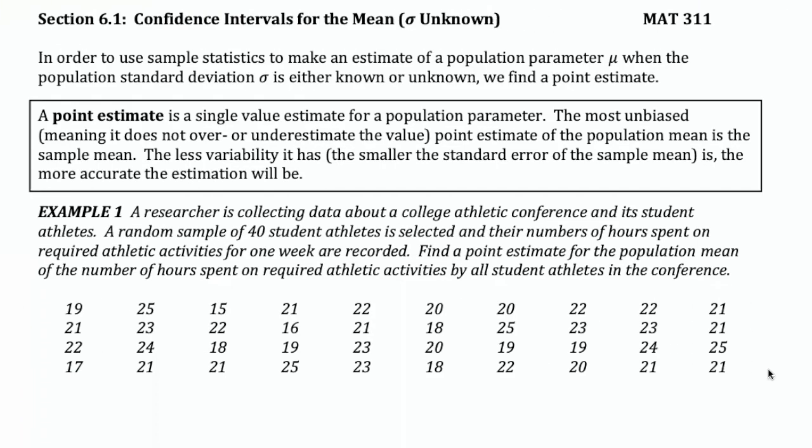A point estimate is a single value estimate for a population parameter. The most unbiased — meaning it is not an over or an underestimate — point estimate for a population mean is the sample mean. And the less variability it has, the smaller the standard error or standard deviation of the sample mean is, the more accurate that estimation will be.